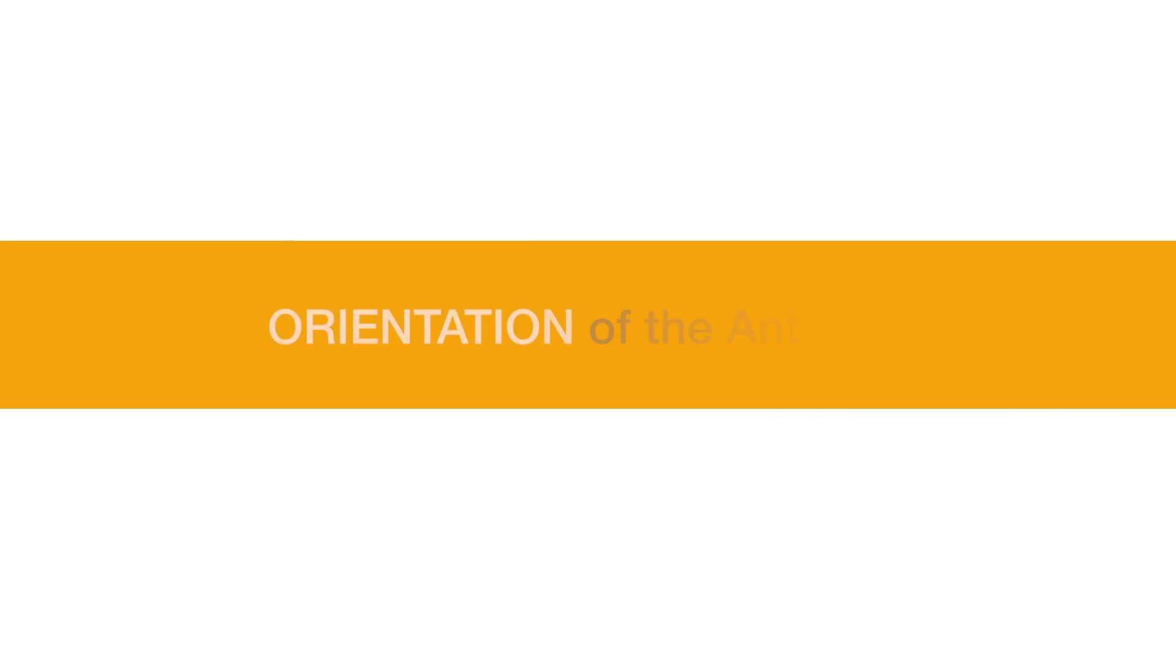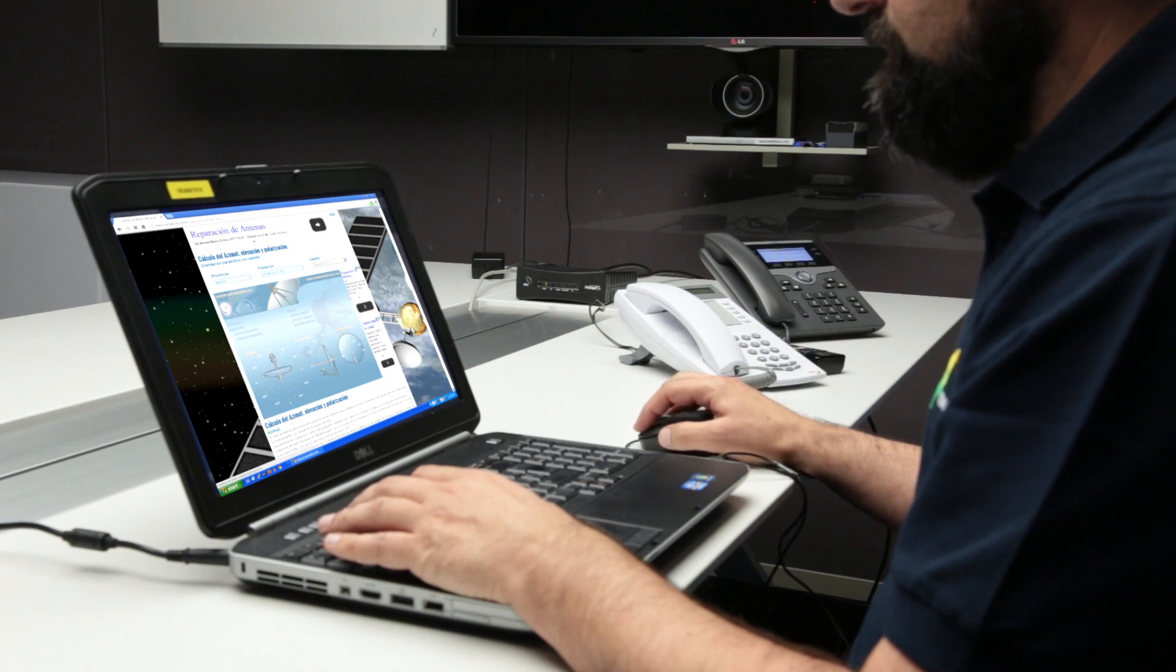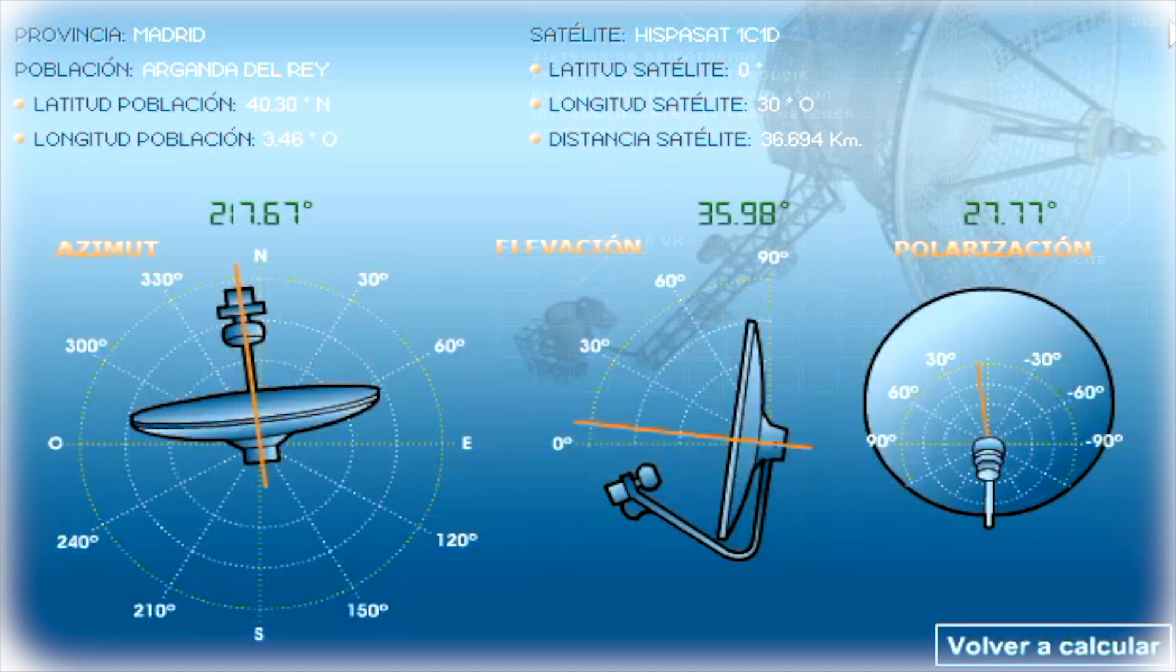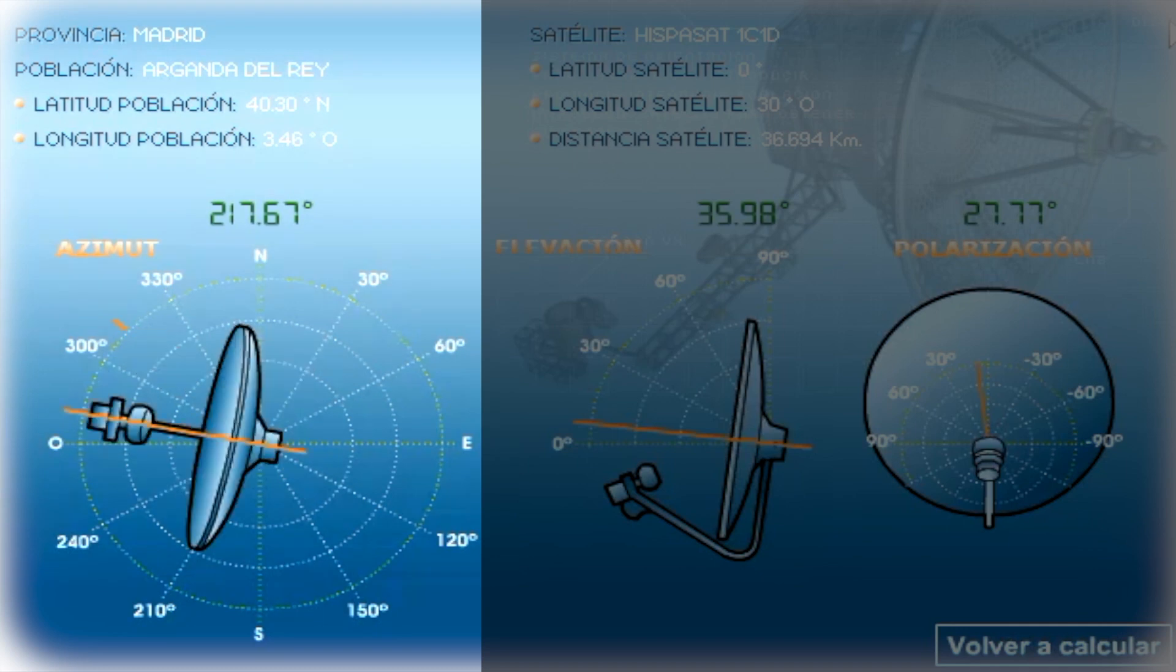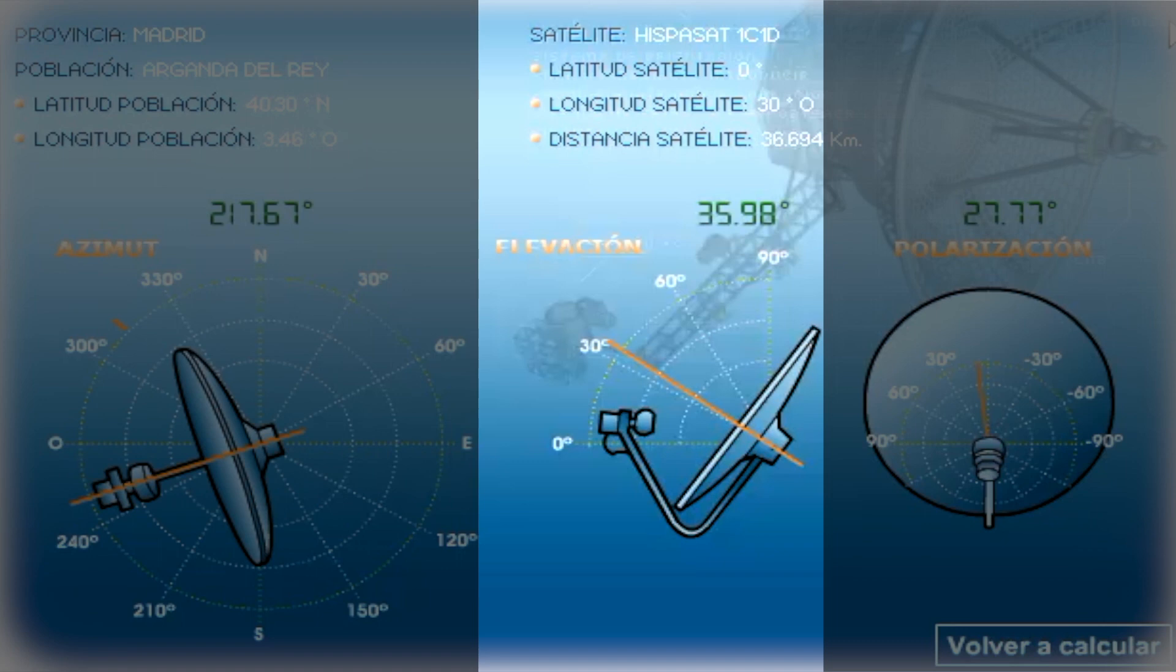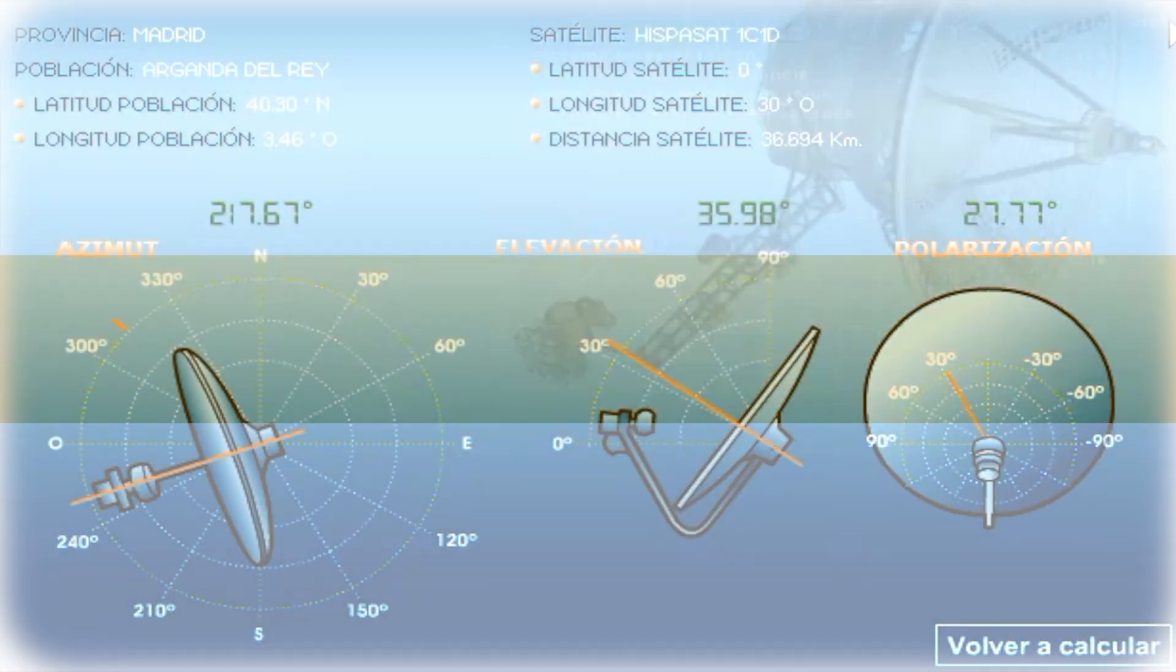Orientation of the antenna. Before beginning the orientation process, it is necessary to obtain the Azimuth, Elevation and Polarization values for the GPS position of the installation. These data can be obtained on many different webpages. For example, in the case of Madrid, the values would be Azimuth 217.67 degrees north, Elevation 35.98 degrees, and Polarization 27.77 degrees north.